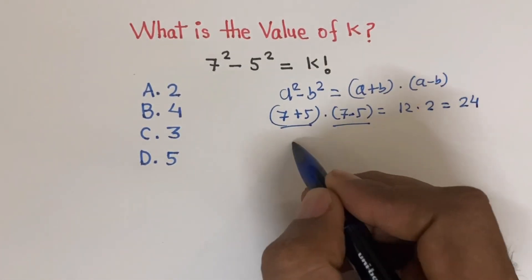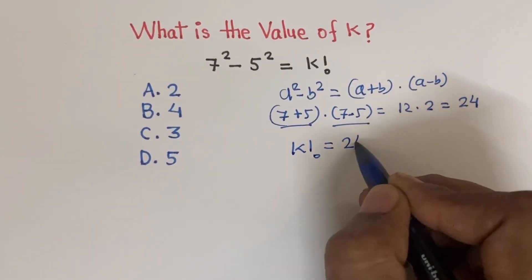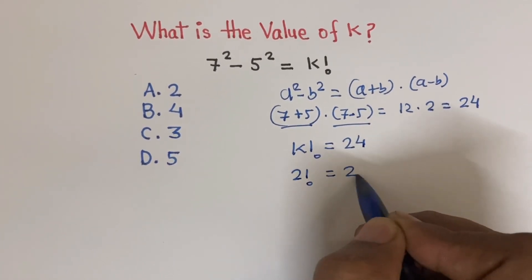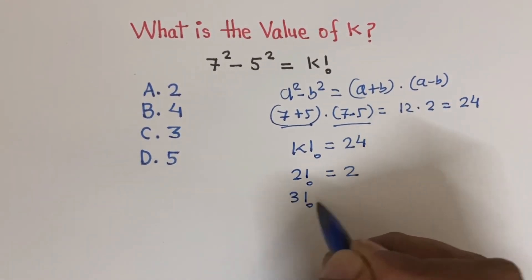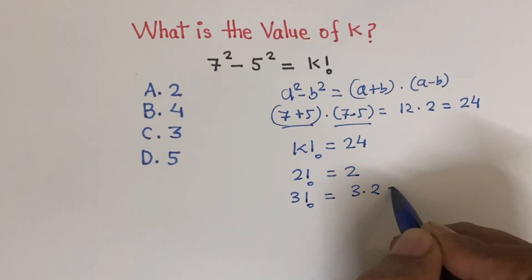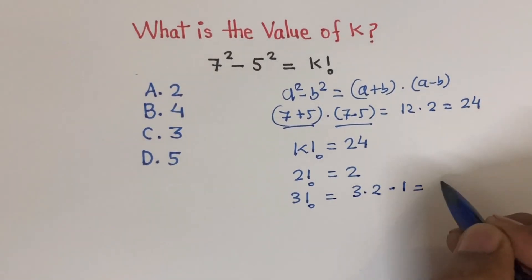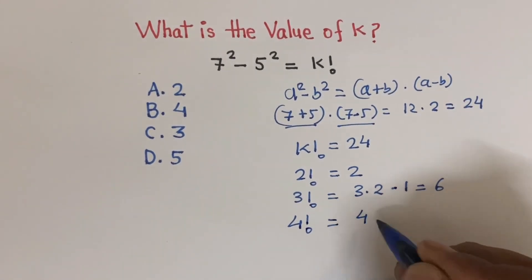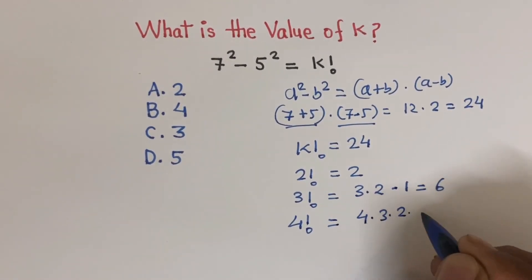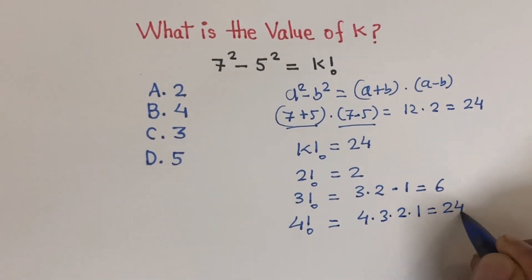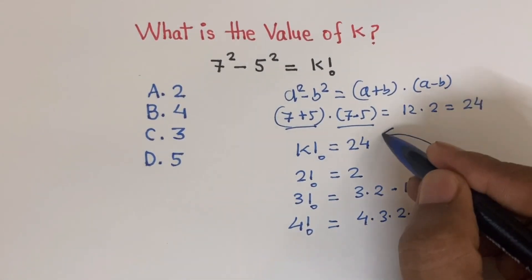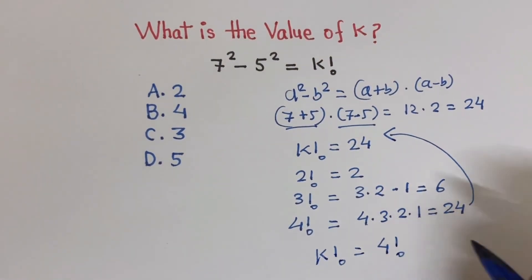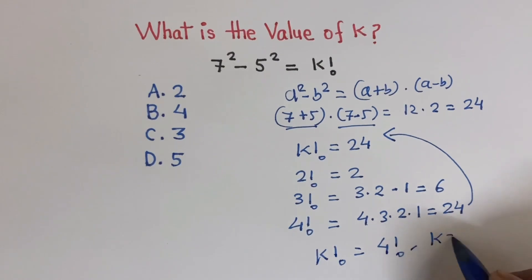Therefore, k factorial equals 24. As you must know, 2 factorial equals 2; 3 factorial equals 3×2×1 equals 6; and 4 factorial equals 4×3×2×1 equals 24. Therefore, k factorial equals 4 factorial, and k equals 4.